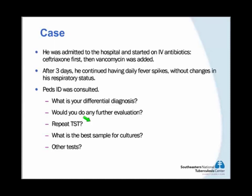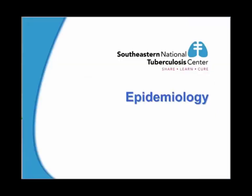Initially he was started on ceftriaxone and then the next day they added vancomycin. After three days of IV antibiotics, he continued to have fevers daily with very high spikes, but without any changes in his respiratory status. At that point, Pediatric ID was consulted. The questions I want you to think about — what is your differential diagnosis? Would you do any further evaluation? Do you want to repeat the PPD? What would be the best sample to send for cultures, and what other tests could you do to decide what this patient has? We will go back to those at the end.